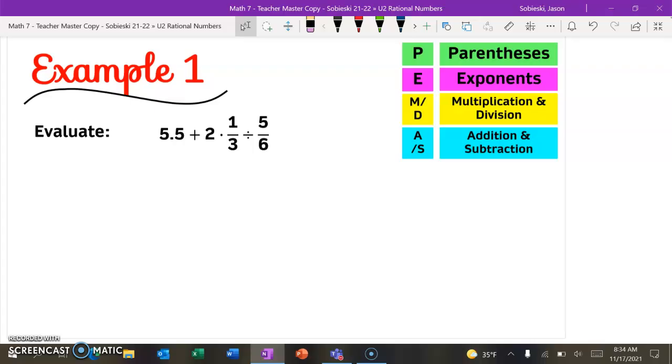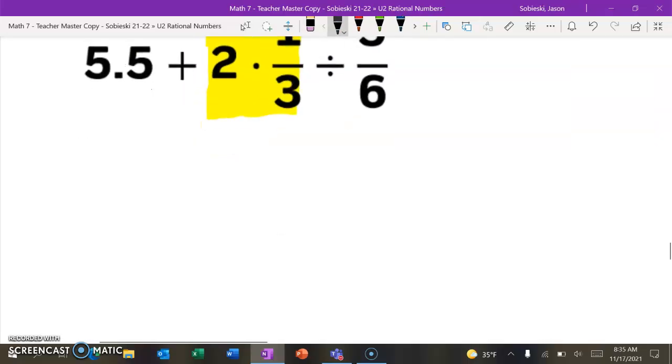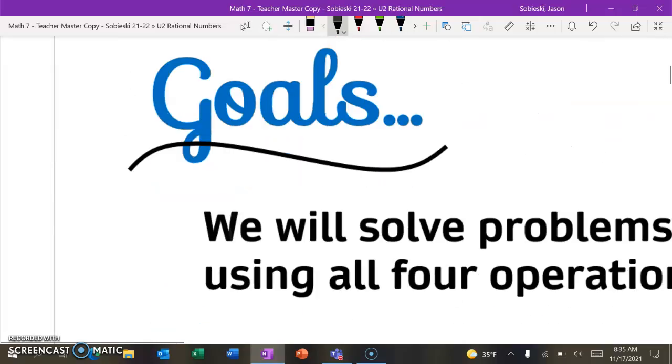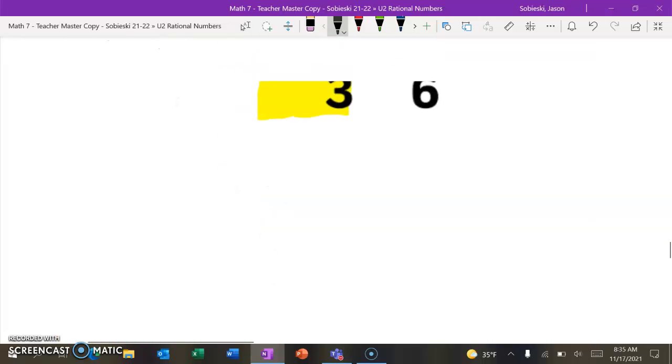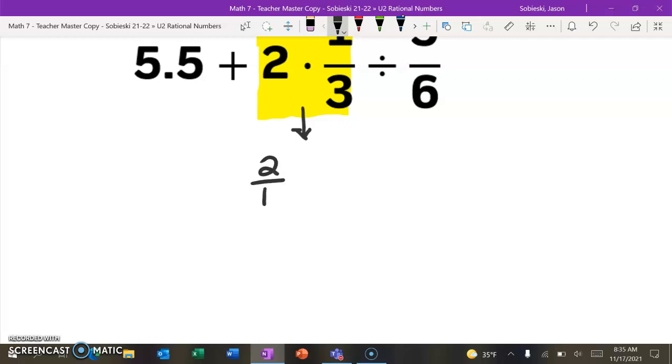All right, so now we're going to get into a real example with fractions, decimals, and all of these different operations. Let's go through our checklist like yesterday. Do we have any parentheses? Don't think so, so we can cross that out. There's also no exponents to deal with. So we can go right to multiplying and dividing from left to right. Here is the first multiplication problem we see: 2 times 1/3. When we multiply, take any whole numbers and make it a fraction. So we're going to rewrite that as 2/1 times 1/3. So 2/1 times 1/3 will give us 2/3. So now we have 5.5 plus 2/3 divided by 5/6.